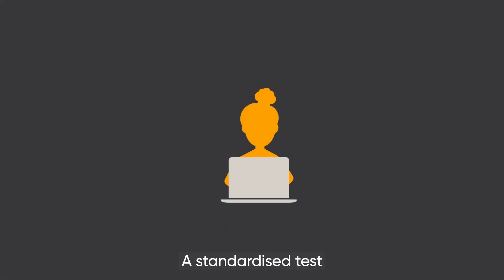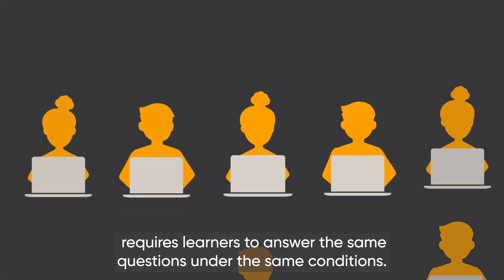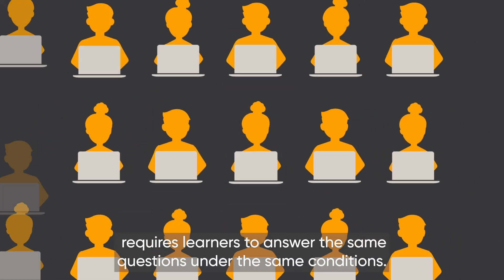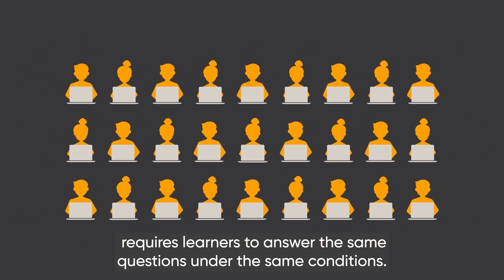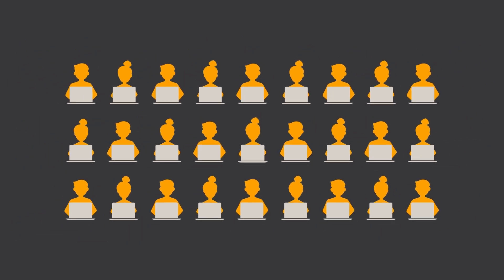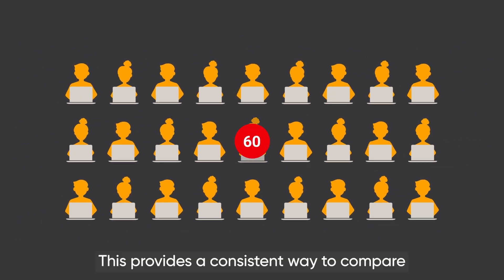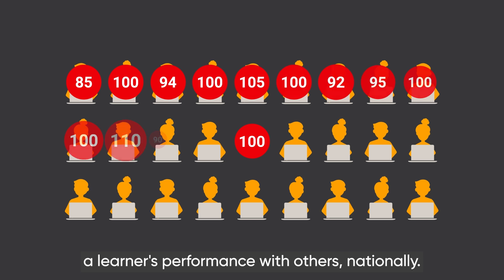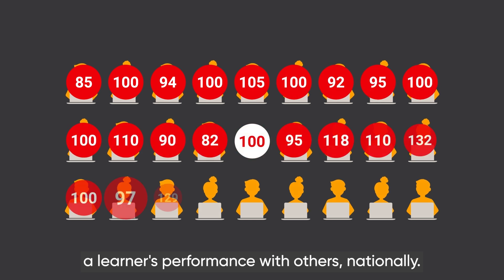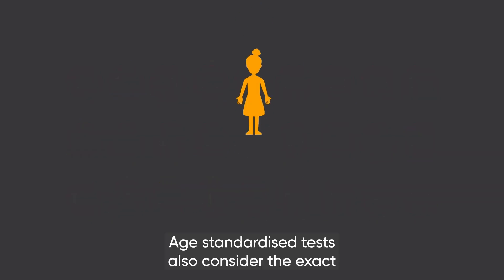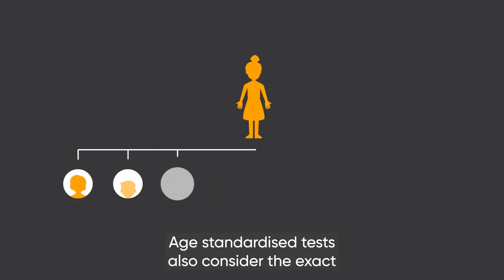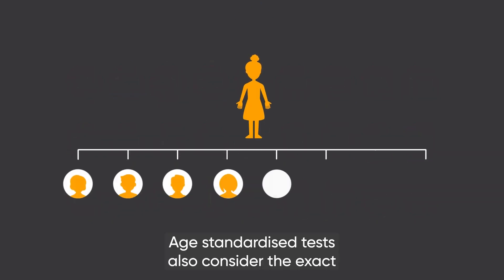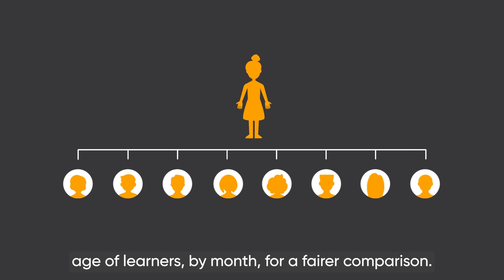A standardised test requires learners to answer the same questions under the same conditions. This provides a consistent way to compare a learner's performance with others nationally. Age standardised tests also consider the exact age of learners by month for a fairer comparison.